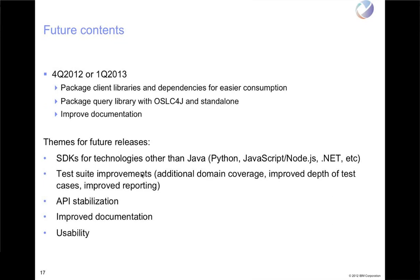So later this year, or it might be early next year — a lot of it depends on just the Eclipse process for getting a release out — we would like to have a LEO 1.1, which would be packaging up the client libraries that I discussed earlier and their dependencies for easy consumption. Similar to what we did with OSLC4J itself, we'd package up a version with the Eclipse-approved versions of the dependencies, and then a bare version which you can add the dependencies yourself if you want.